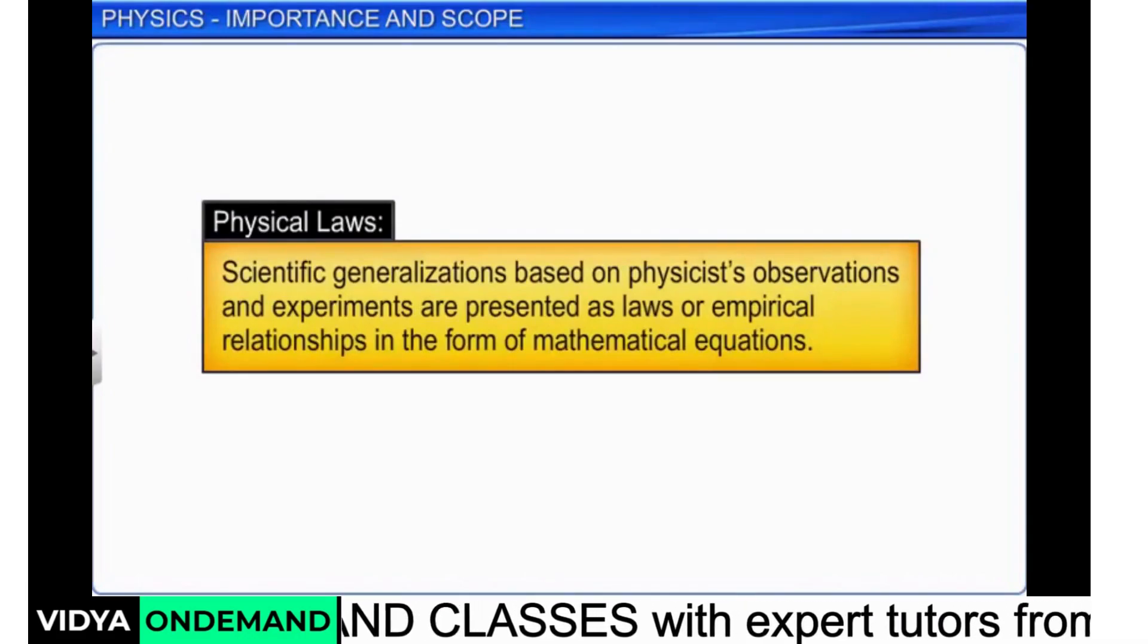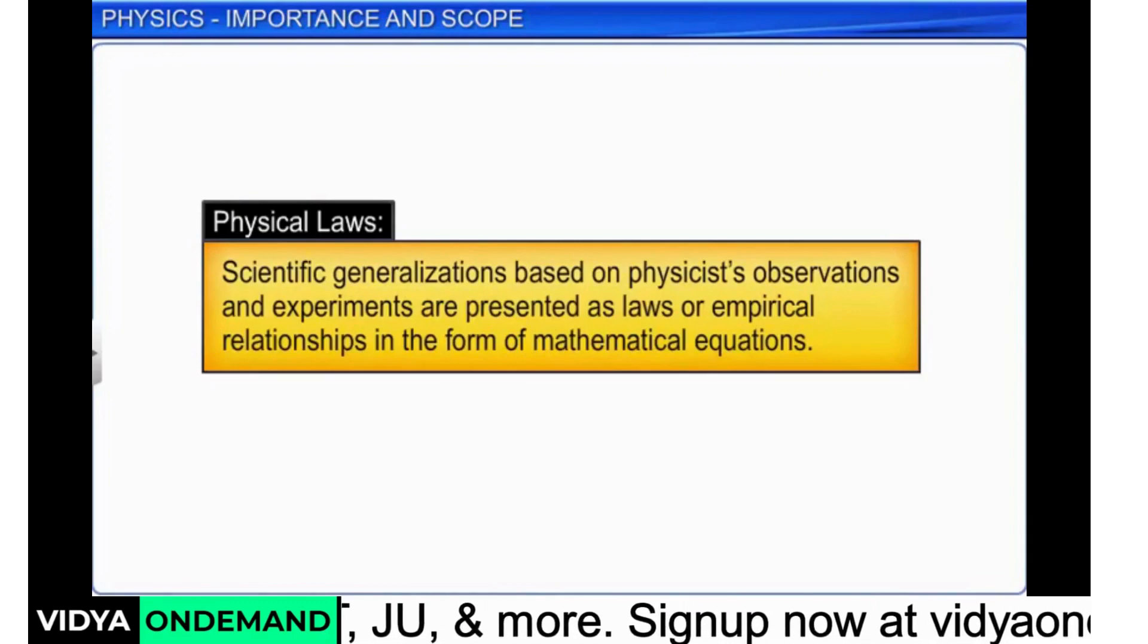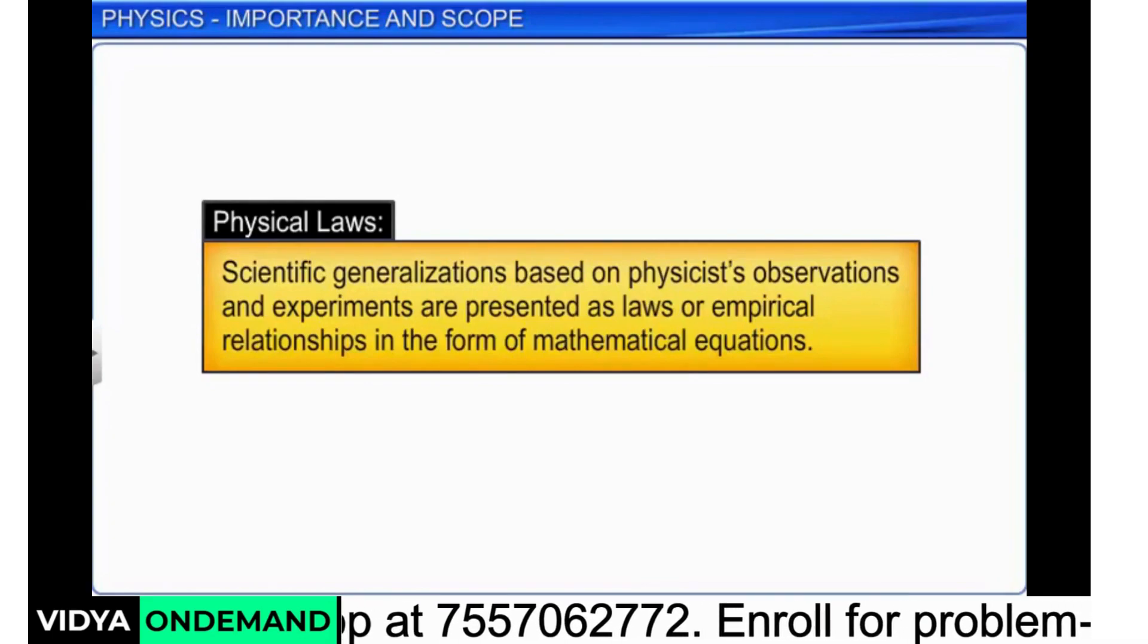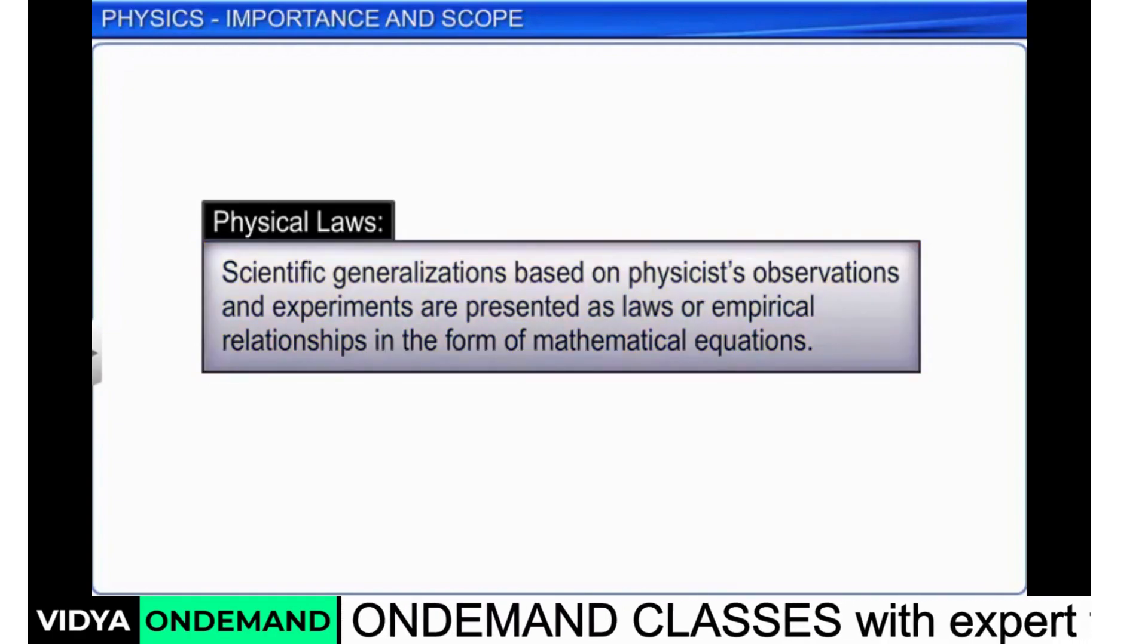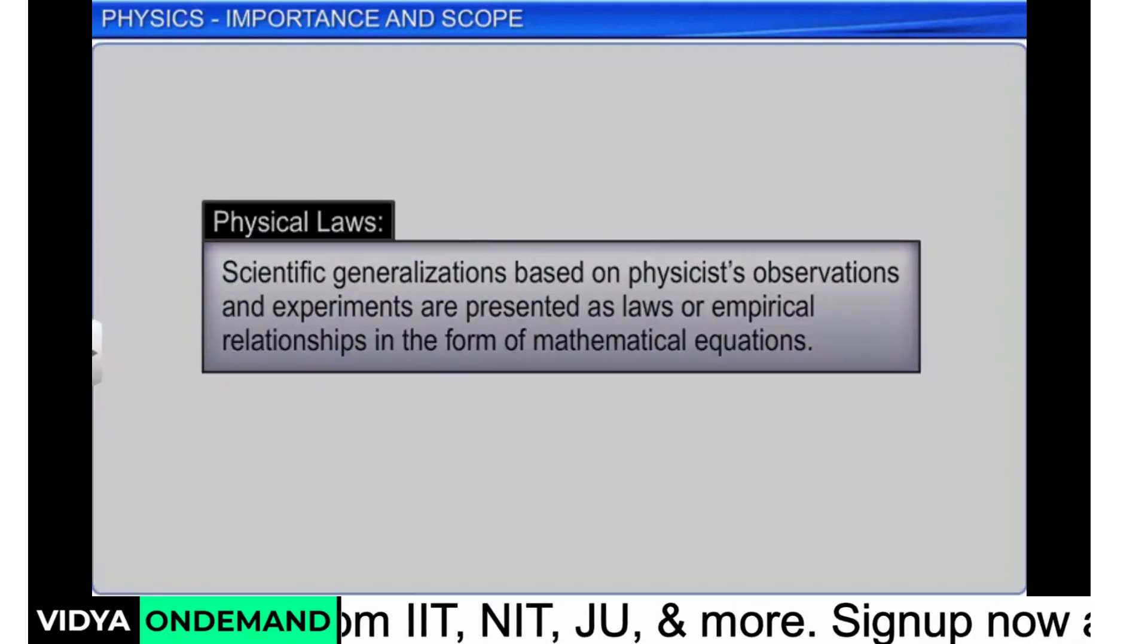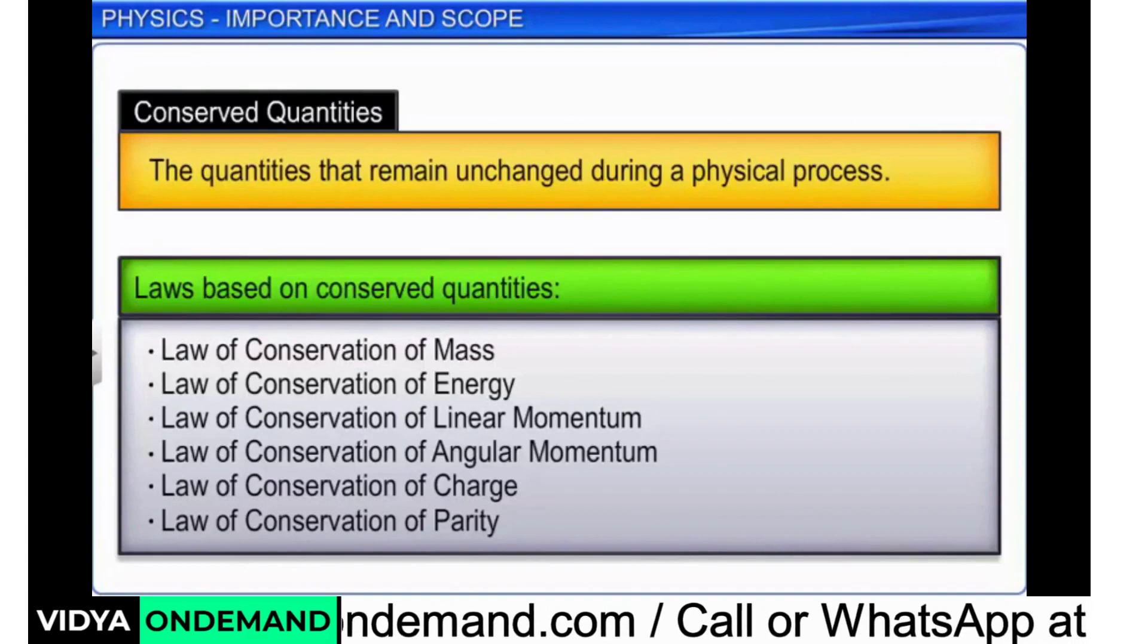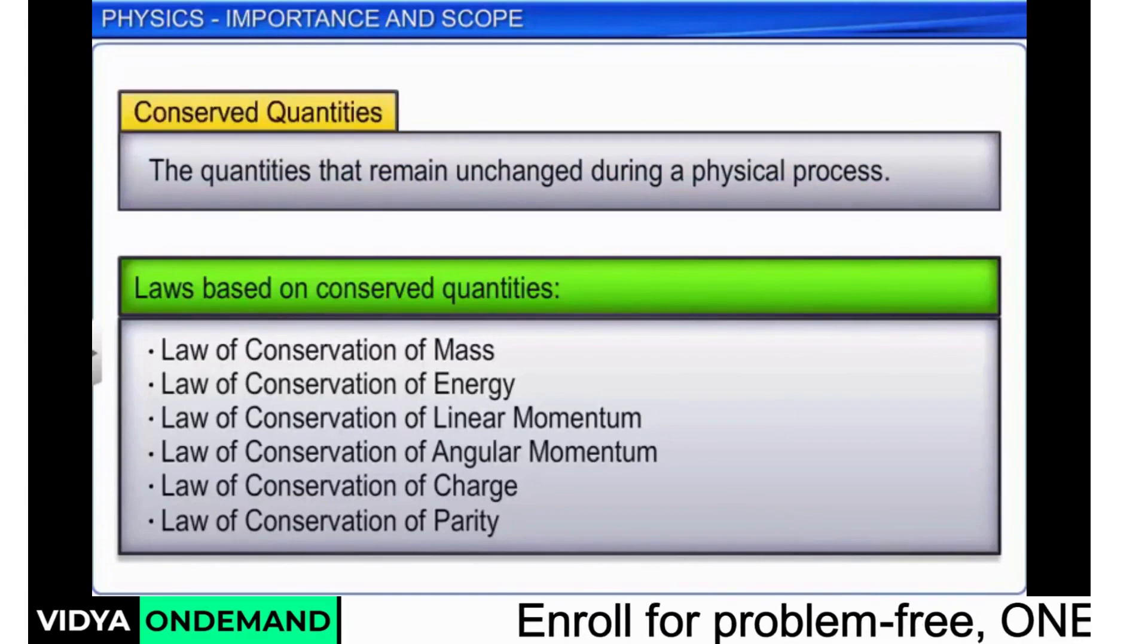Apart from finding the facts through observation and experiments, physicists always try to summarize these facts as laws or empirical relations in form of mathematical equations. These are known as physical laws. Most of these laws are based on some special quantities that remain unchanged in a process, which are known as conserved quantities.